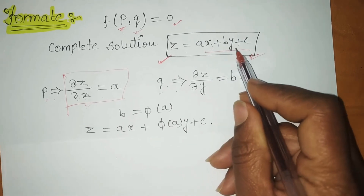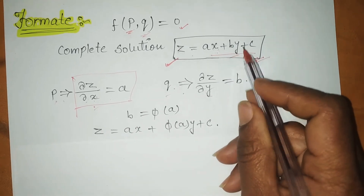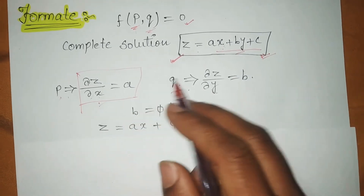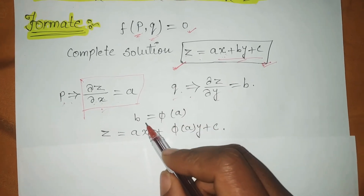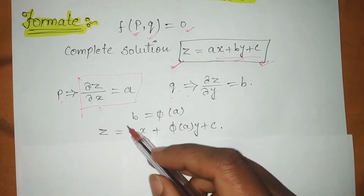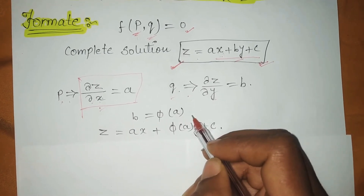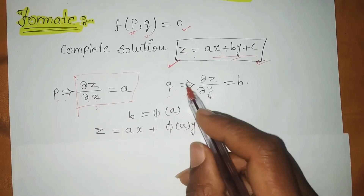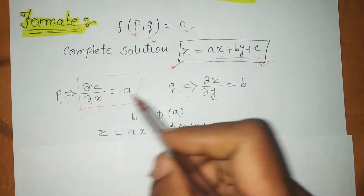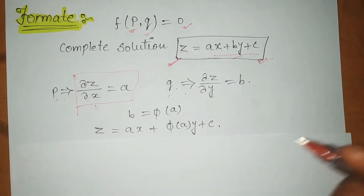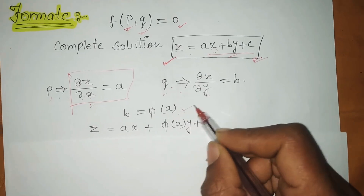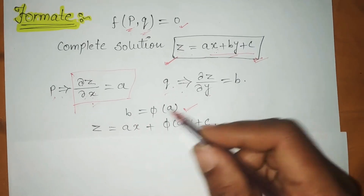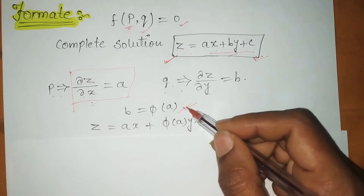When you differentiate the RHS, only the y terms differentiate; the rest will be 0. After finding the differentiation values, your next step is: b = φ(a). This is the form of your solution. Whatever format comes, you will understand it from the question — you need to change the equation into this format where b is on one side and the remaining terms are called φ(a).